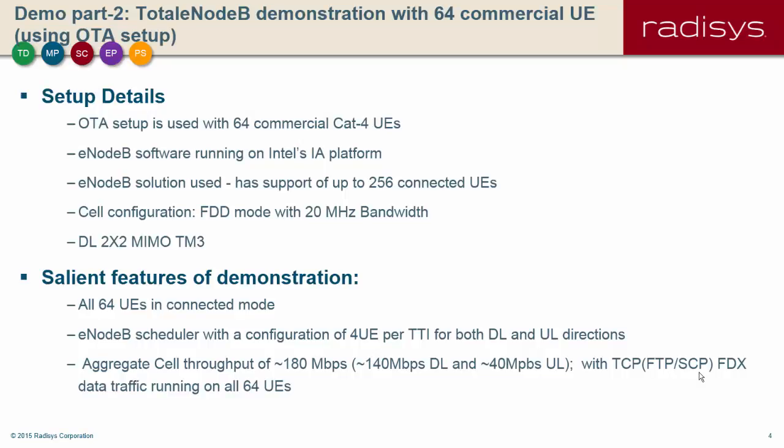Welcome again to the Redisys Total E-Node-B demonstration, part 2. In this part of the demo we are going to use the same Total E-Node-B solution which has support of a maximum of 256 connected UEs. We are going to use OTA setup with 64 commercial UEs of category 4 for this demonstration. Our Total E-Node-B software will be running on Intel's IA platform, configured for a single cell in FDD mode with 20 MHz bandwidth. Our E-Node-B has support of 2x2 MIMO in downlink and transmission mode supported is TM3.